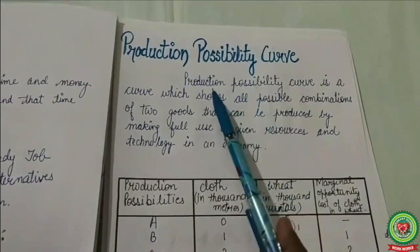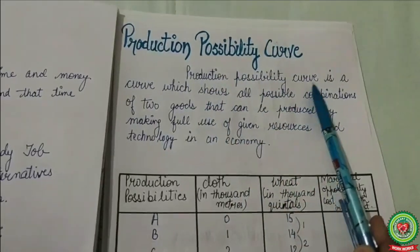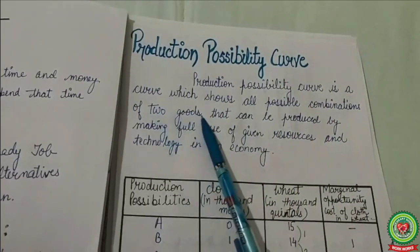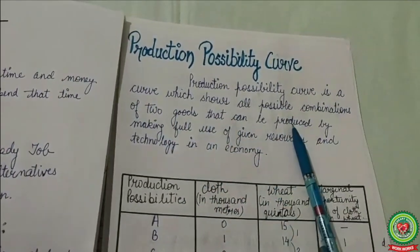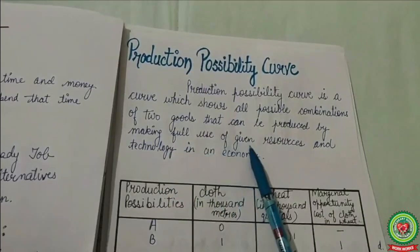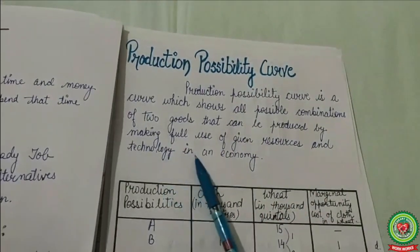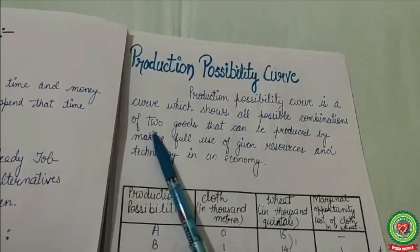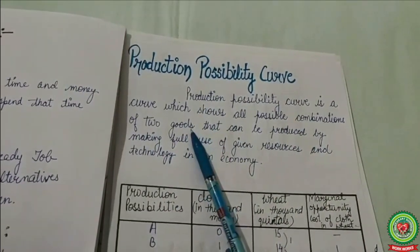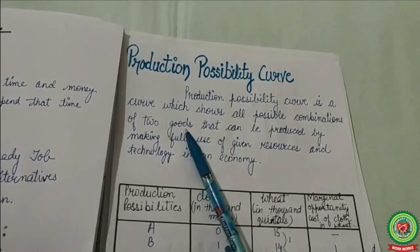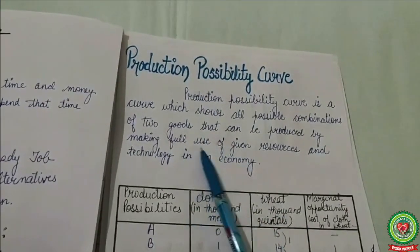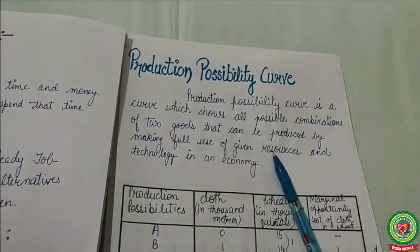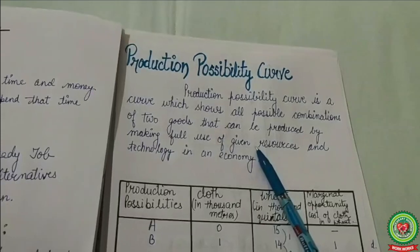The Production Possibility Curve is a curve which shows all possible combinations of two goods that can be produced by making full use of given resources and technology in an economy. These are the possible combinations that people can produce using the given or limited resources available to them.